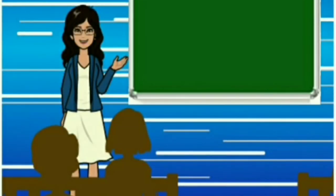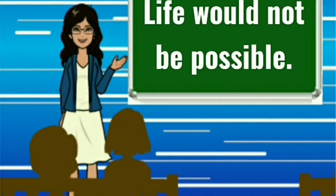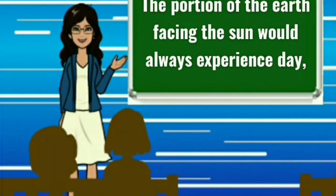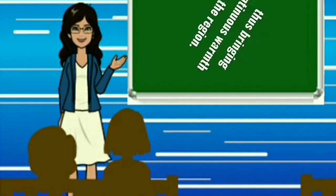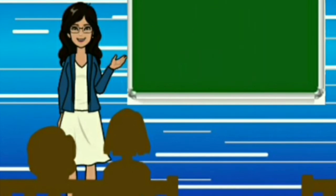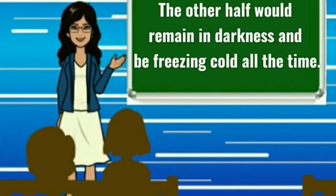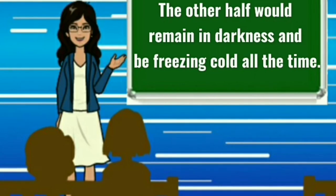I have a question for you. And my question is, what would happen if the earth did not rotate? You must have understood by now that in such a condition, life would not be possible. Why? Because the portion of the earth facing the sun would always experience daytime and bring in continuous warmth to the region. Whereas the other half would remain in darkness and be freezing cold all the time. So, it is not possible for life to exist on the earth in such a harsh condition.